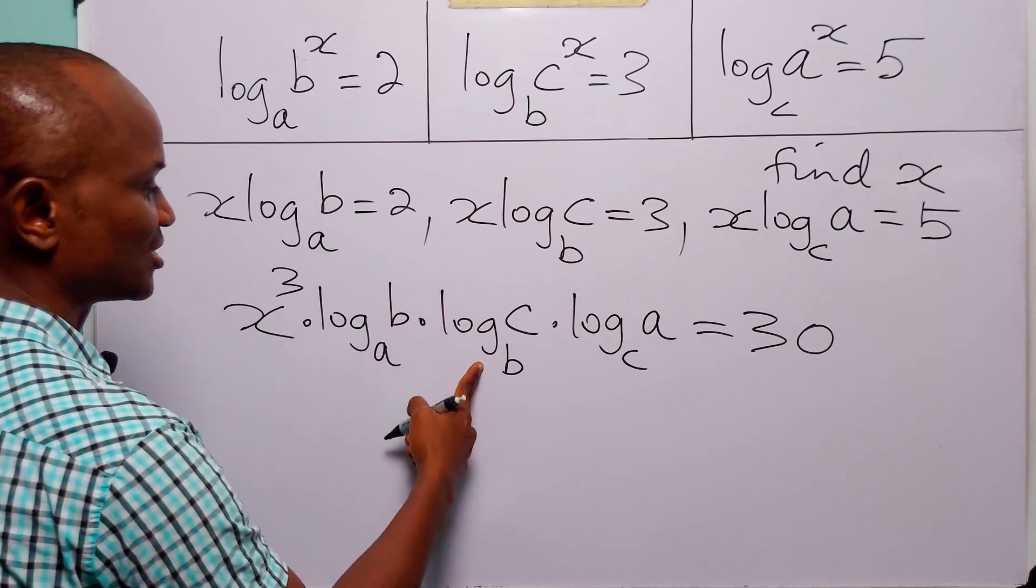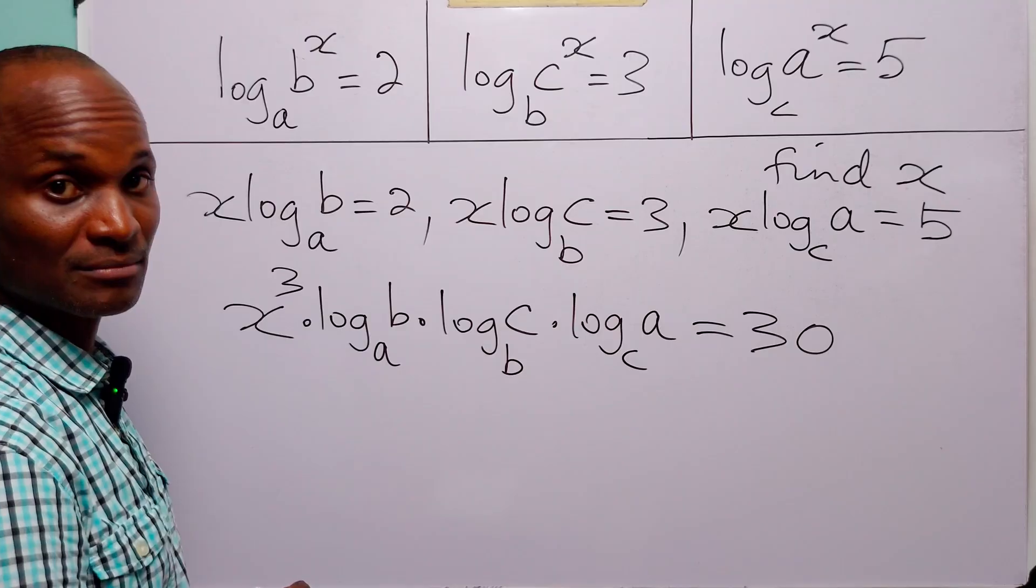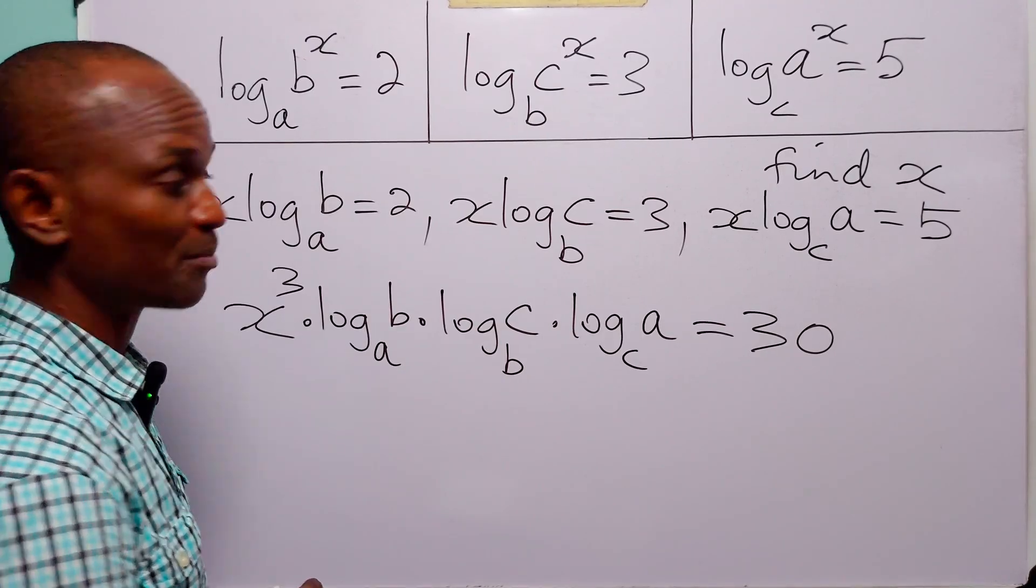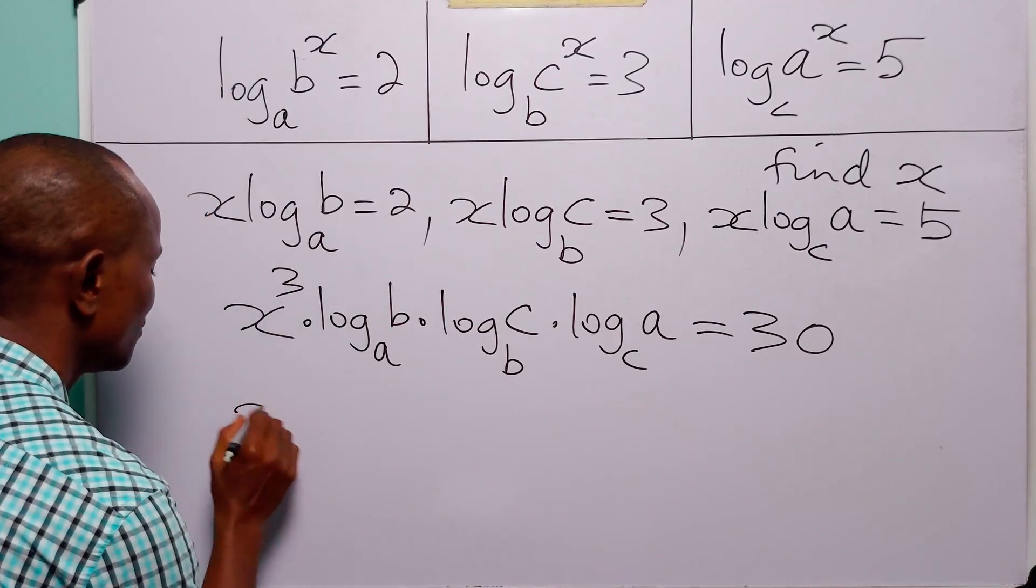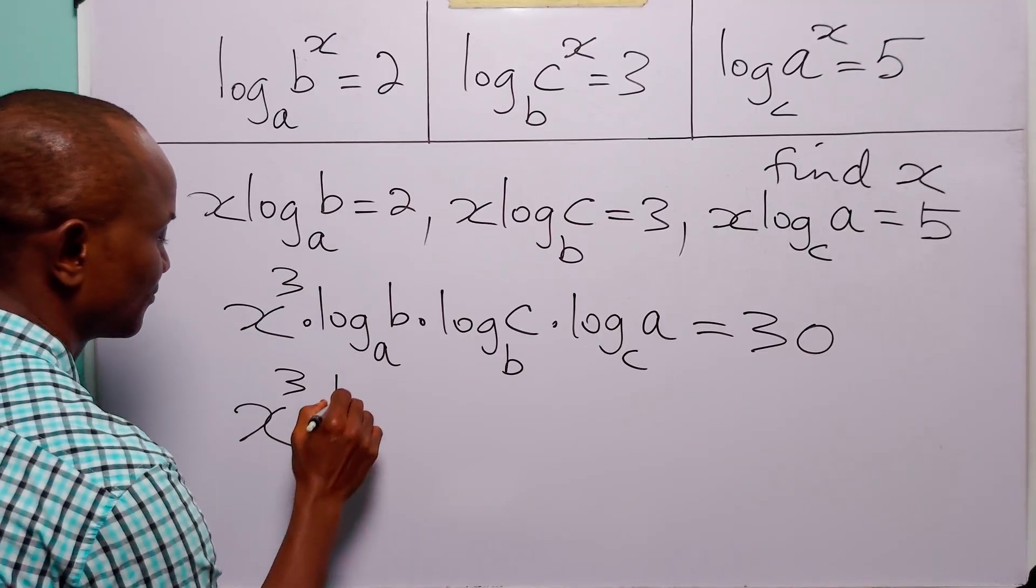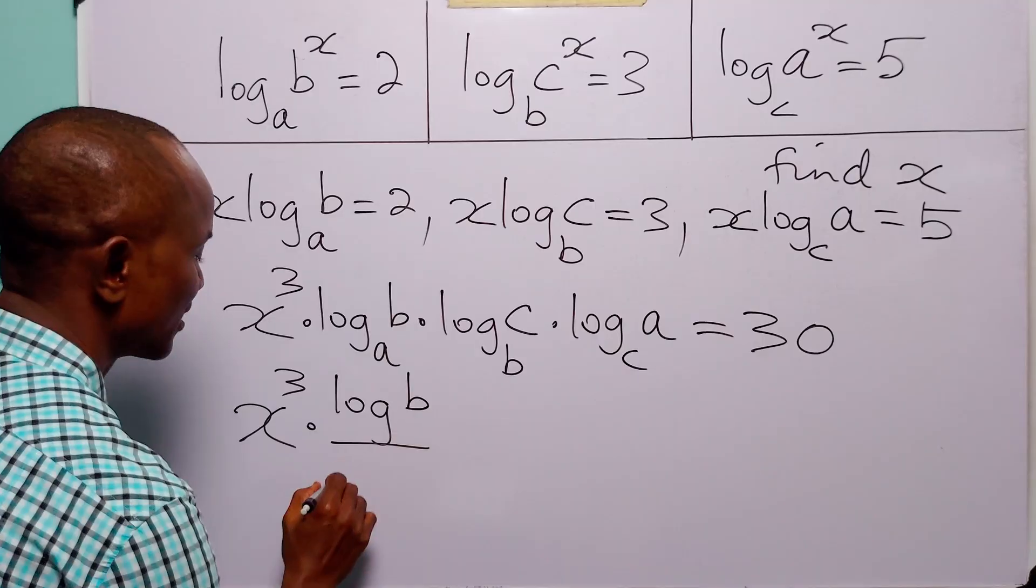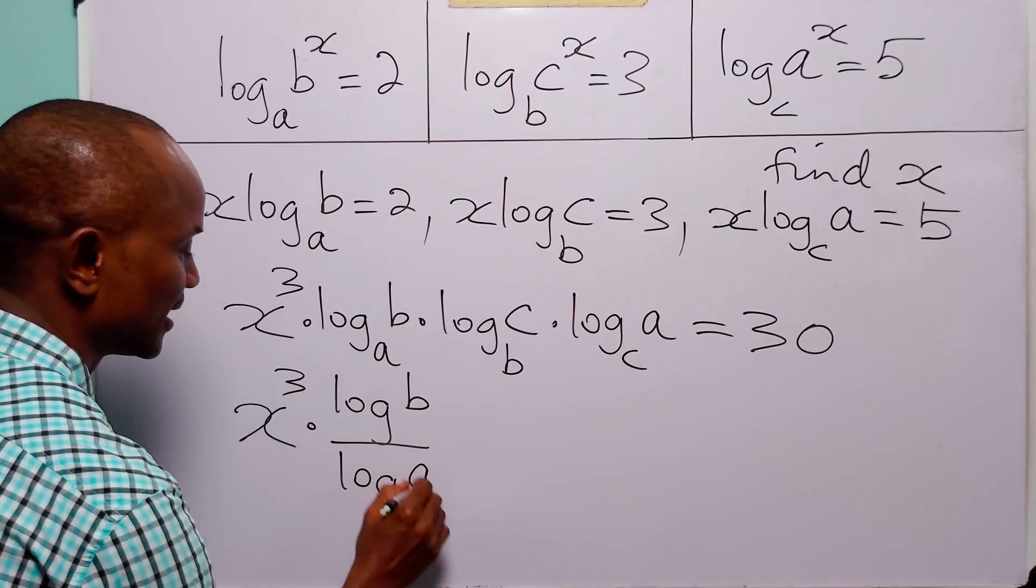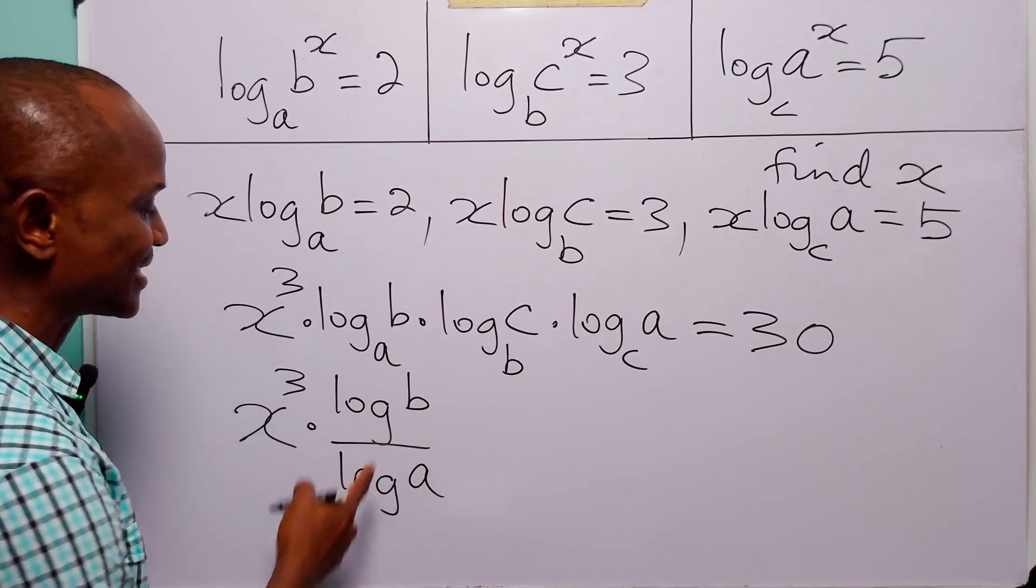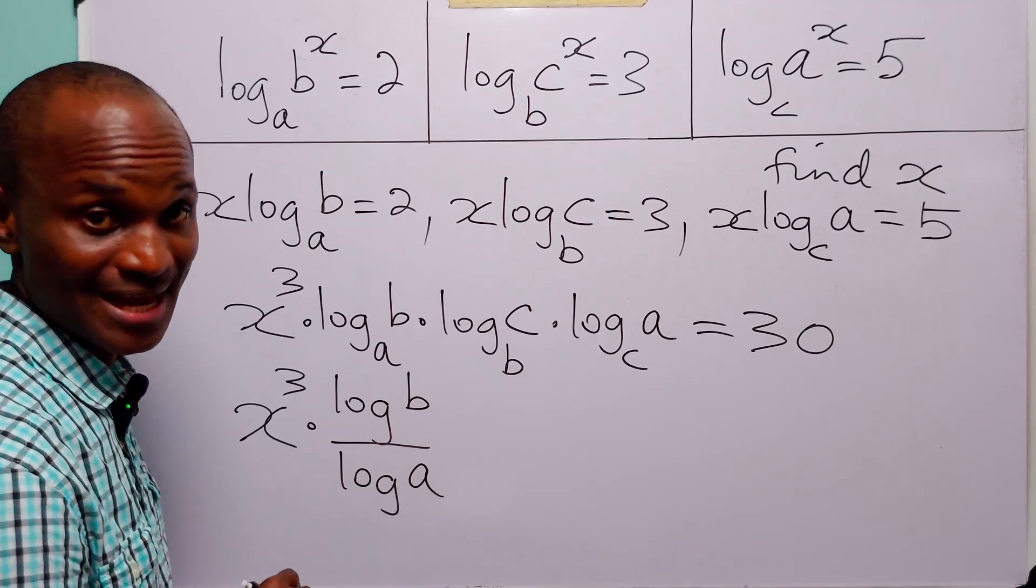Now let us change all three log terms to base 10 using our change of base formula. We have x cubed multiplied by log b over log a. Remember that when we write log without specifying the base we are working in base 10.